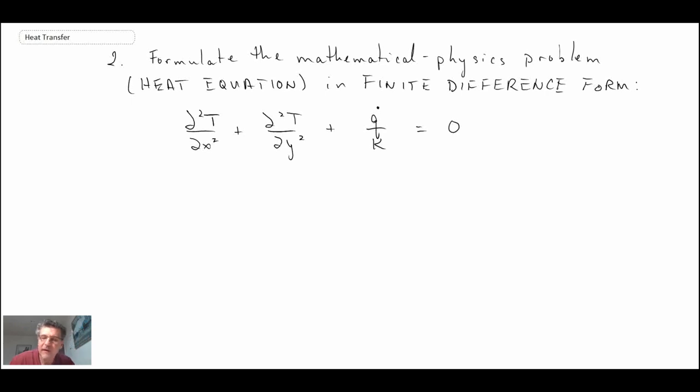If we have a case of the steady heat transfer in two dimensions with internal generation, the heat diffusion equation and partial differential equation would look like this. Now what we want to do is we want to be able to express that in finite difference form.